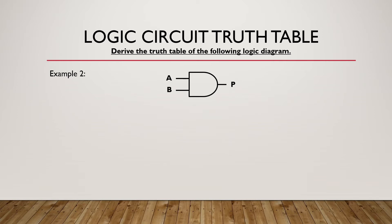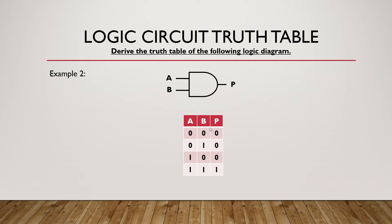Example 2: We have a NAND gate with two inputs, so we are going to have four different outputs. The truth table values for this NAND gate were covered in Logic Gates Part 1. We multiply the two input values: 0×0=0, 0×1=0, 1×0=0, 1×1=1 — then invert to get the NAND outputs: 1, 1, 1, 0.